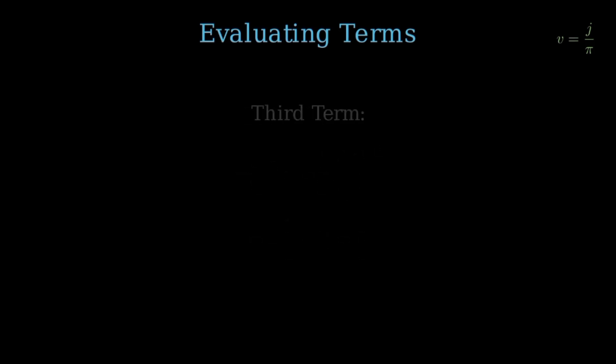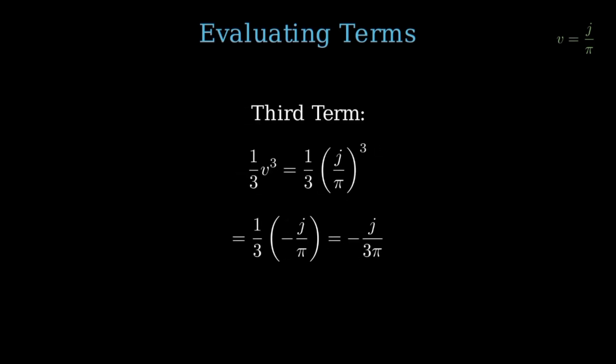The third term is one-third times v cubed. Substituting v, this becomes one-third times (j over pi) cubed. Since j cubed equals negative pi squared times j, we substitute this in. (j over pi) cubed equals negative pi squared times j divided by pi cubed, which simplifies to negative j over pi. Then one-third times negative j over pi equals negative j over 3pi. So the third term simplifies to negative j over 3pi.